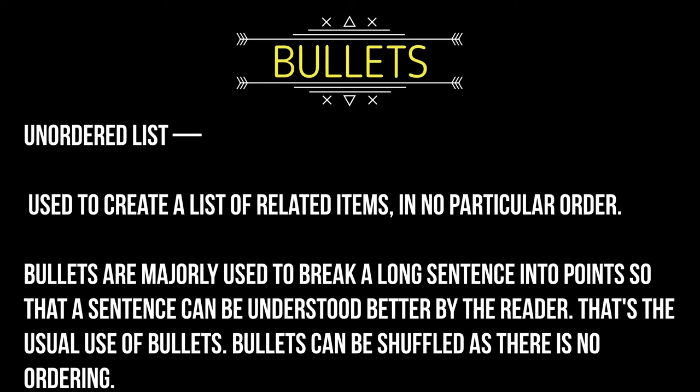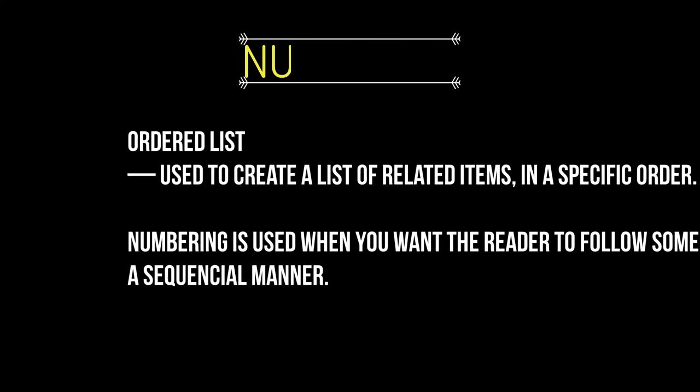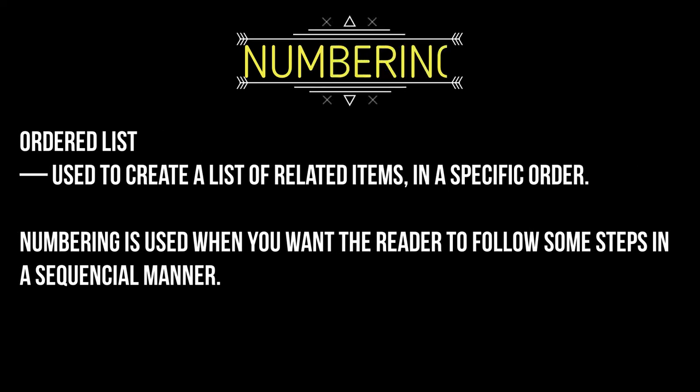Bullets can be shuffled as there is no ordering. Numbering is an ordered list used to create a list of related items in a specific order. Numbering is used when you want the reader to follow some steps in a sequential manner. Now we will see where to use numbering and where to use bulleting.